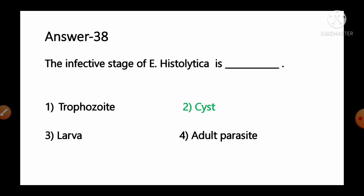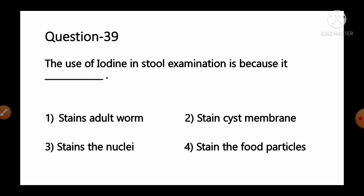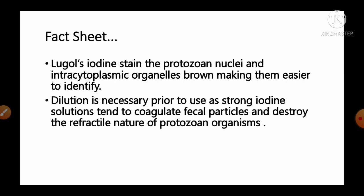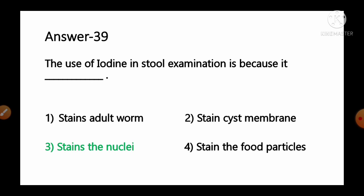Question number 39: The use of iodine in stool examination is because it — options: 1) stains adult worm, 2) stains cyst membrane, 3) stains nuclei, 4) stains food particles. Lugol's iodine stains the protozoan nuclei and intracytoplasmic organelles brown, making them easier to identify. Dilution is necessary prior to use as strong iodine solution tends to coagulate fecal particles. So option number 3, stains nuclei, is the correct answer.